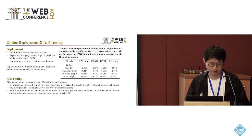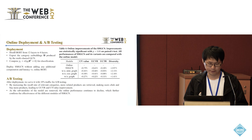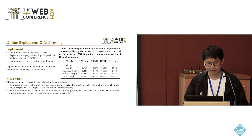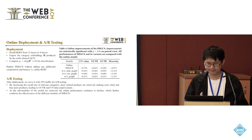After offline evaluation, we deploy the model online. To reduce latency, we distill BERT from 12 layers to four layers and export the category embeddings produced by the GCN, then compute the dot product between query and category for classification. In this way, we can deploy the model without adding additional computation or latency compared with the existing online model. After deployment, we serve it with 10 percent traffic for A/B testing. By increasing the recall of relevant categories, more related products are retrieved, making users click and buy more products, leading to user value improvement. As sub-modules of the model are removed, online performance continues to decline, further confirming the effectiveness of the model.